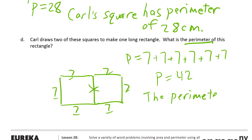The perimeter of Carl's rectangle—we should say Carl's new rectangle because his square is also a rectangle—42 centimeters.